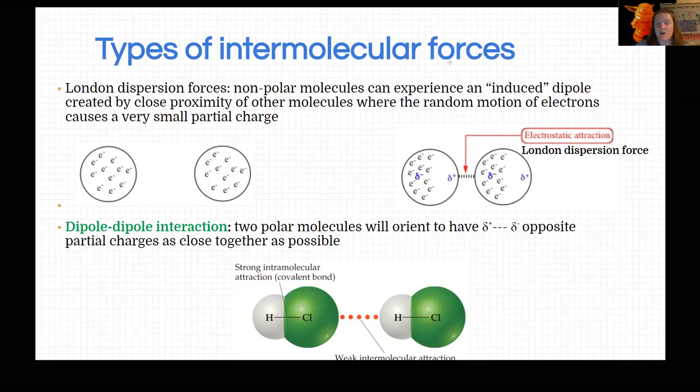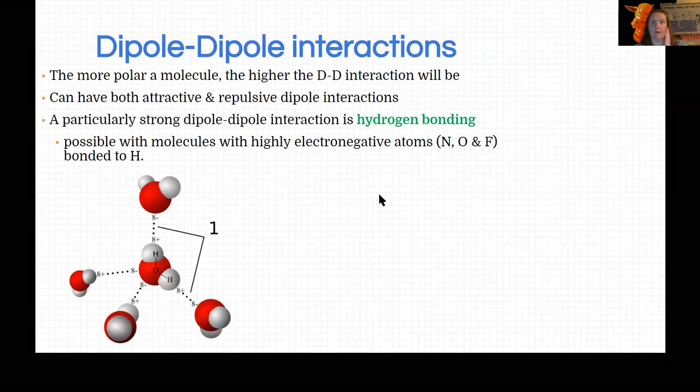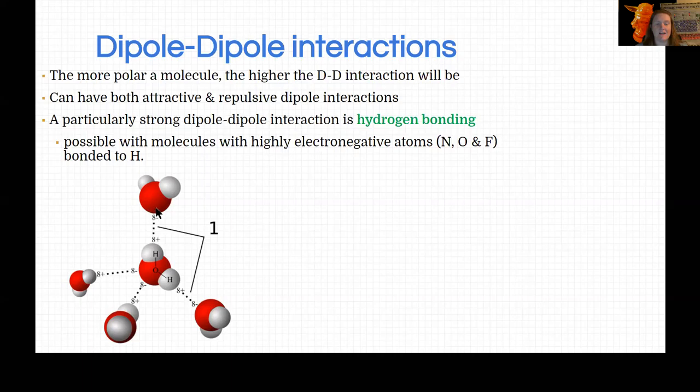Our next strongest IMF is hydrogen bonds. Remember, they're not actually bonds. It's a lie. Don't believe it. It turns out hydrogen bonds are one of the most important parts of biochemistry. It is the reason your body does anything, literally. We have to understand how it works. Water is an excellent example of hydrogen bonding.